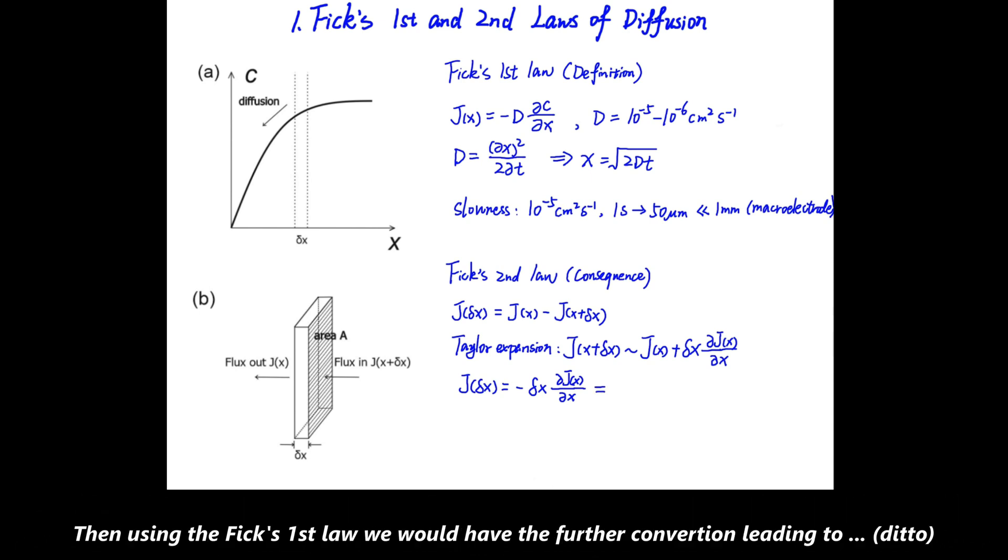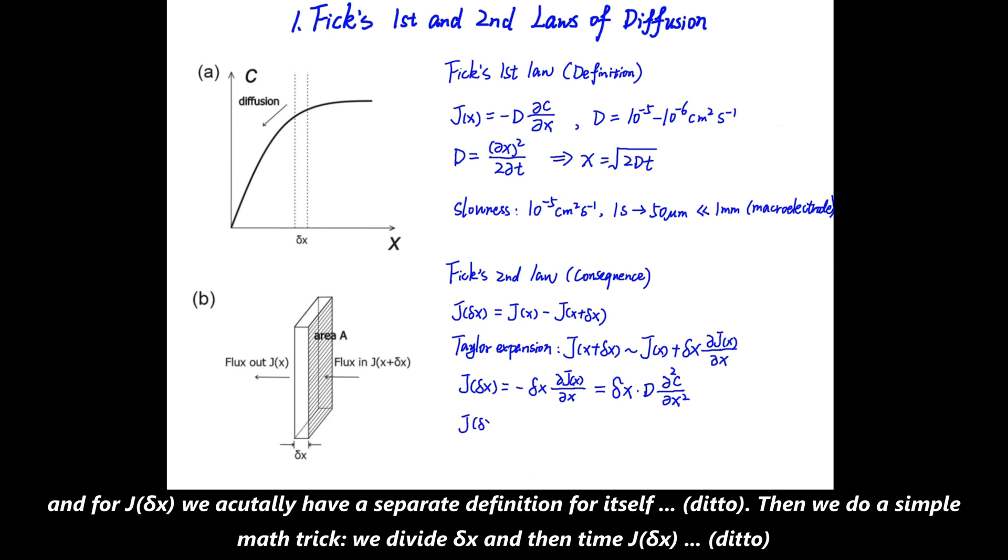As such, we would have JΔx = -Δx·∂J/∂x. Then using Fick's first law, we would have the further conversion leading to Δx·D·∂²C/∂x². And for JΔx, we actually have a separate definition: it equals Δn/(A·Δt), which can be approximated to (∂n/∂t)/A. Then we do a simple math trick: we divide Δx and then multiply by Δx, so we would have (∂C/∂t)·Δx.